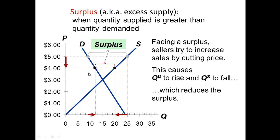We would continue until the sellers lower their price down to $3. At $3, sellers would sell 15 and buyers would buy 15. The process of moving from $5 to $4 to $3 — that market process — is what we in economics call the invisible hand. The invisible hand will always move the market from a state of disequilibrium to a place of equilibrium, and that is the theory of the invisible hand.